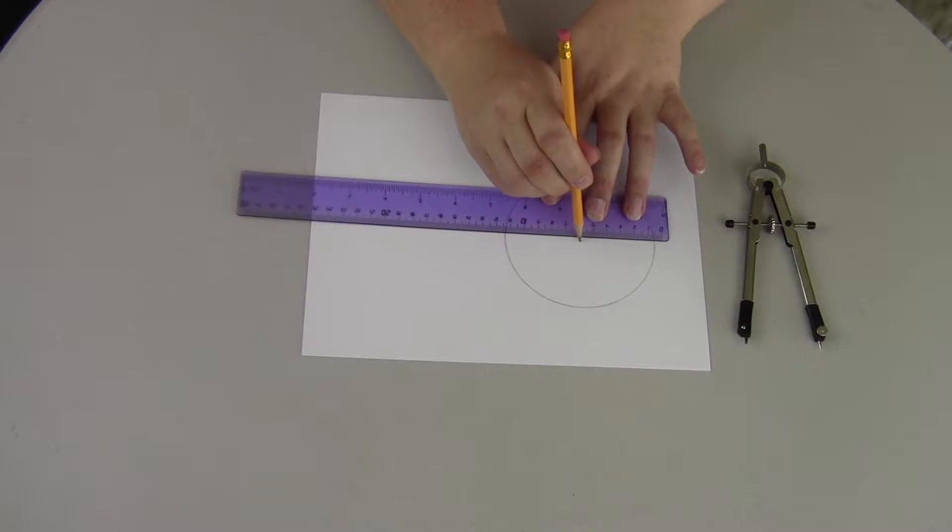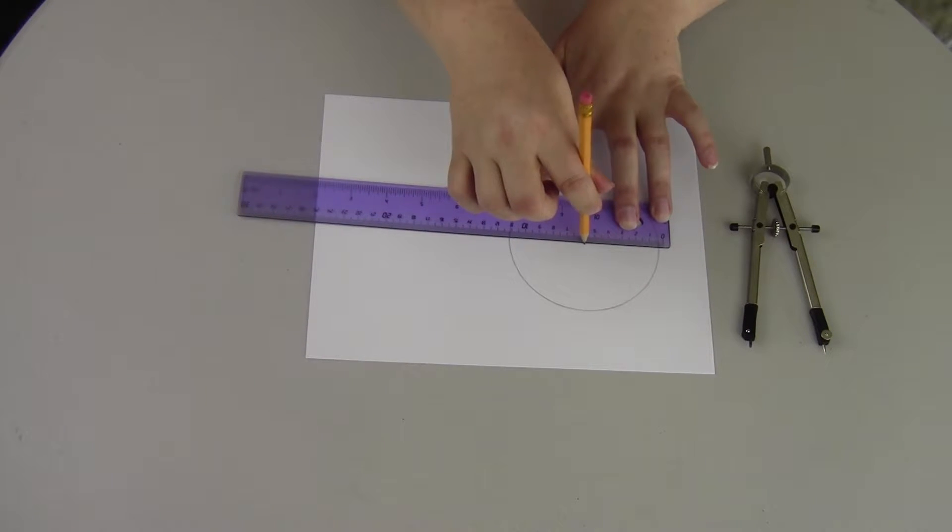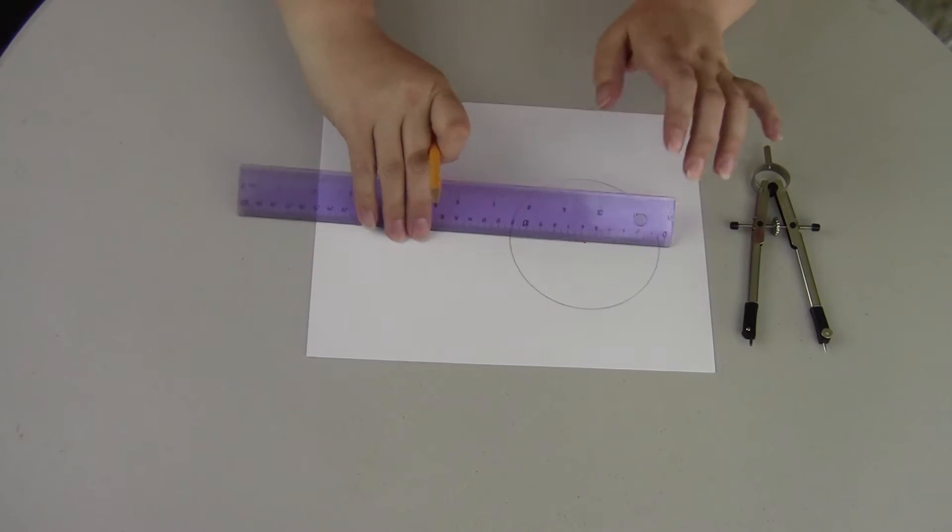How you draw a line is you put your pencil on the point first, then you move your ruler up to that, and then you line it up how you want, and then you form your line. That is how you draw a line.